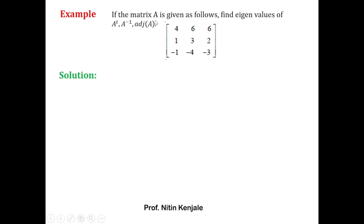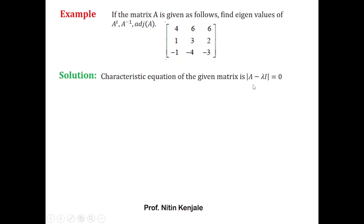Now moving to the next example: given matrix A, find the eigenvalues of A transpose, A inverse, and adjoint of A. You don't need to find these matrices — just find the eigenvalues of A and use the properties studied. The characteristic equation is λ³ − 4λ² − λ + 4 = 0, and solving gives roots 4, 1, and −1 as the eigenvalues of A.